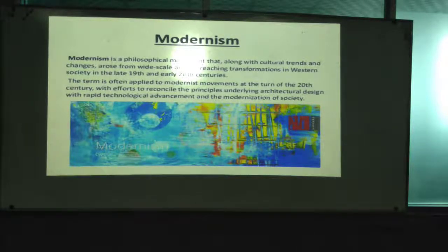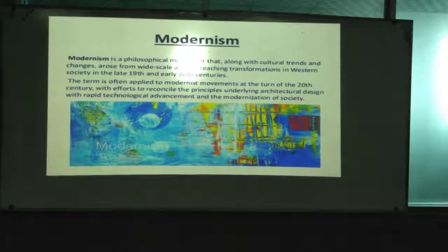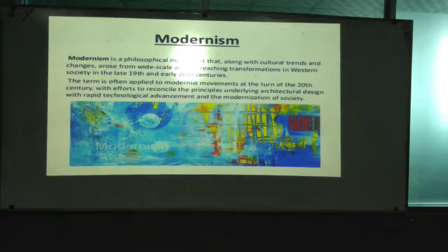Modernism is closely connected to technical advancement and architectural development. People used architecture to build their buildings. For example, the Taj Mahal is one of the seven wonders of the world — its architectural design is completely different from modern ones. Because of technological advancement, people have changed their attitudes, feelings, and reactions.